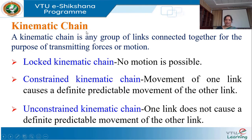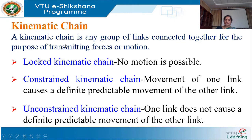Now we will discuss the kinematic chain. A kinematic chain is any group of links connected together for the purpose of transmitting forces or motion. The first basic element is a link — a single rigid body. Then a kinematic pair involves two links. A kinematic chain involves more than two links — it may have three, four, five, or n number of links, and it is used to transmit forces or motion.